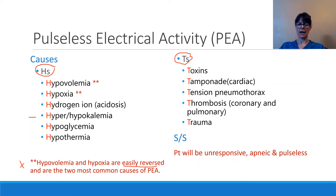Any potassium abnormalities — so hyper- or hypokalemia — as well as hypoglycemia and hypothermia, can also be causes of PEA.